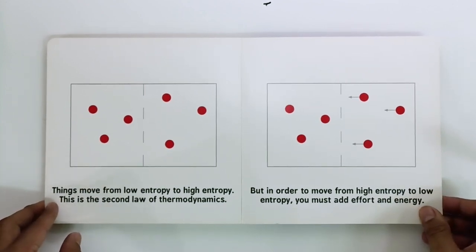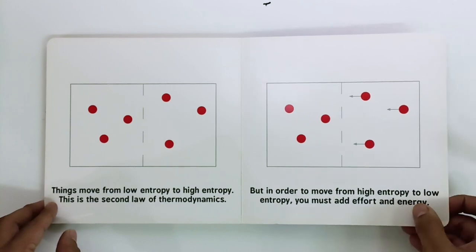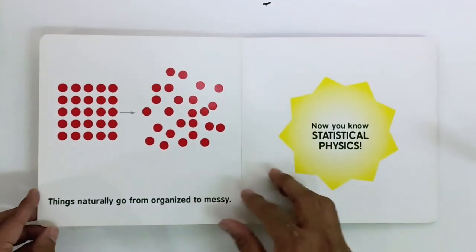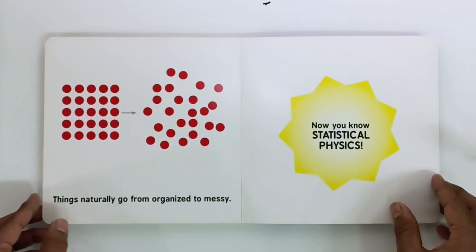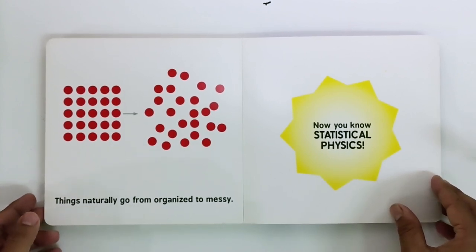This is the second law of thermodynamics. But in order to move from high entropy you must add effort and energy. Things naturally go from organized to messy. Now you know statistical physics.